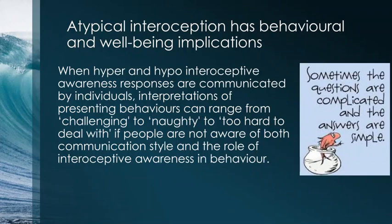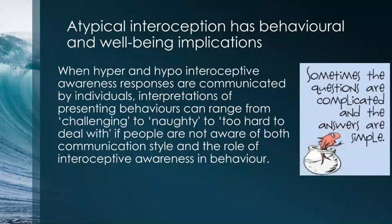Do they go from zero to 100 in a split second? That is another indicator of atypical interoceptive awareness. When we have good interoception, we are aware of our feelings and emotions as they start to get more intense and we do something about it. Somebody with good interoception will notice when they're starting to get hungry and eat a snack, whereas somebody without good interoceptive awareness for hunger may not eat until extremely hungry — or may never notice their body needs food and become significantly unwell over time due to lack of food intake.